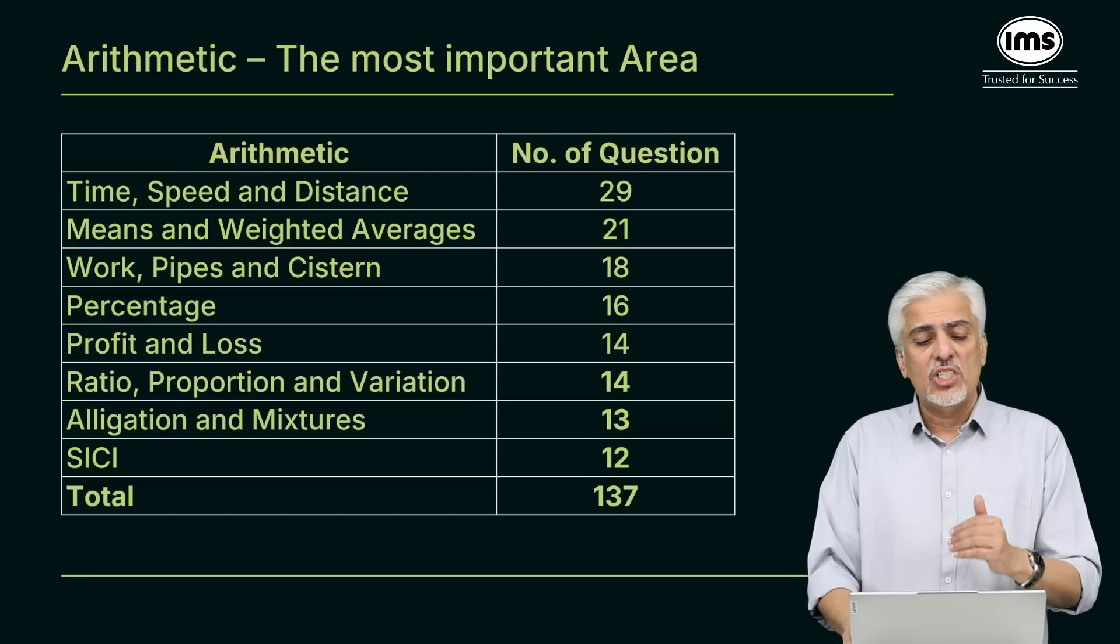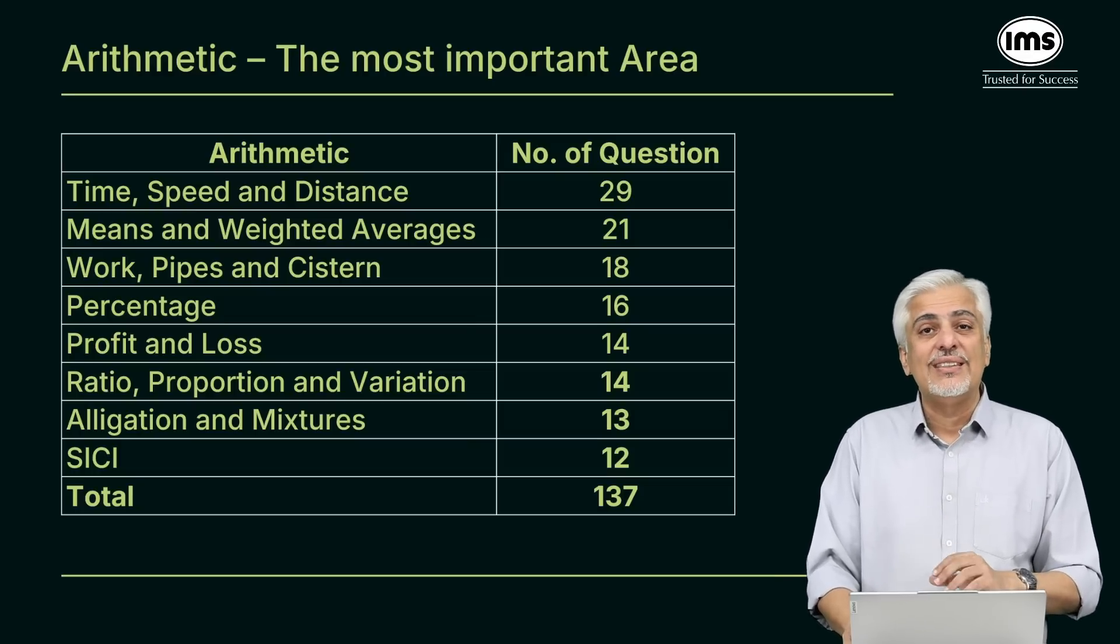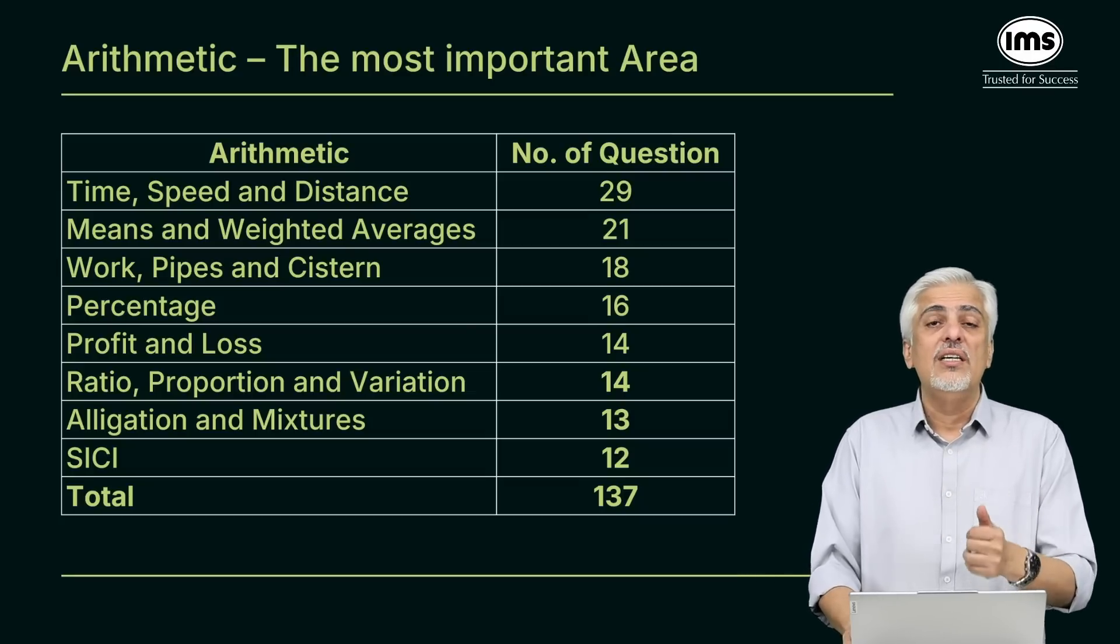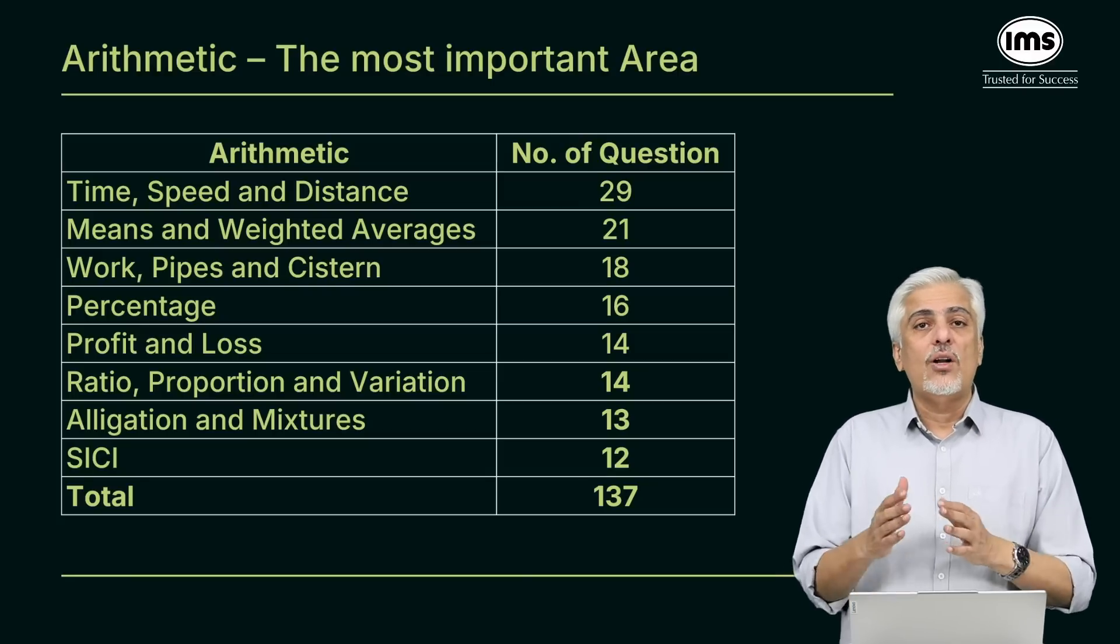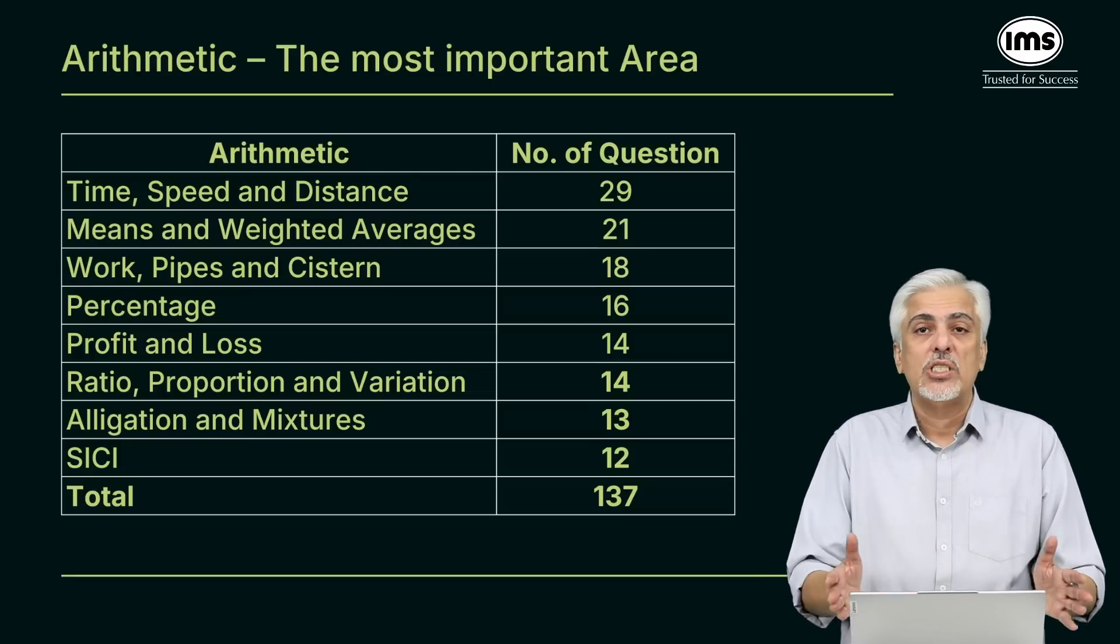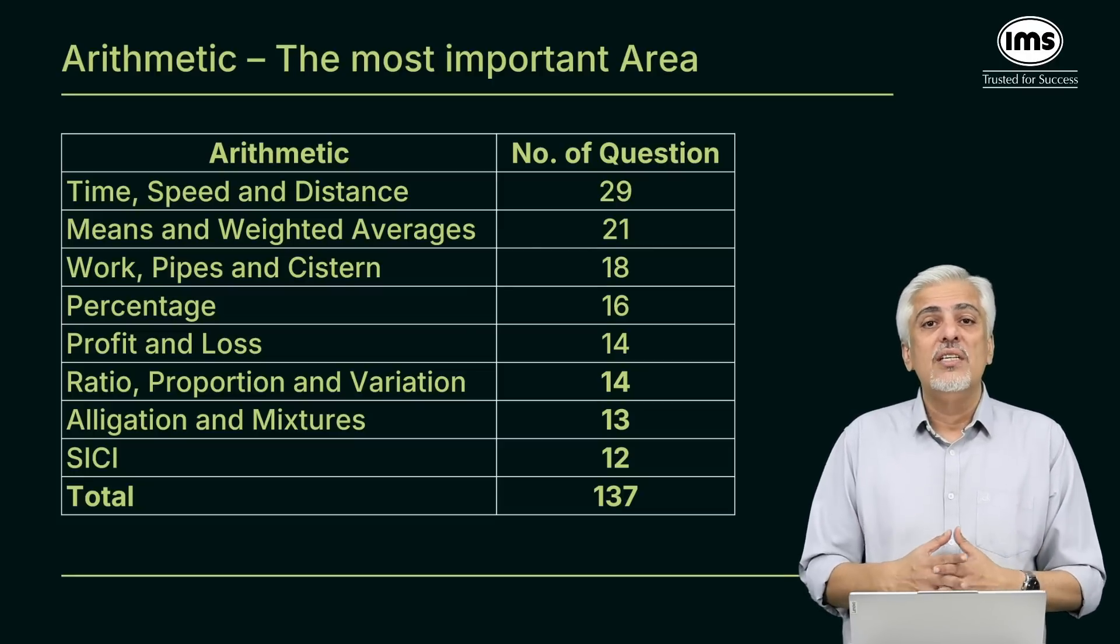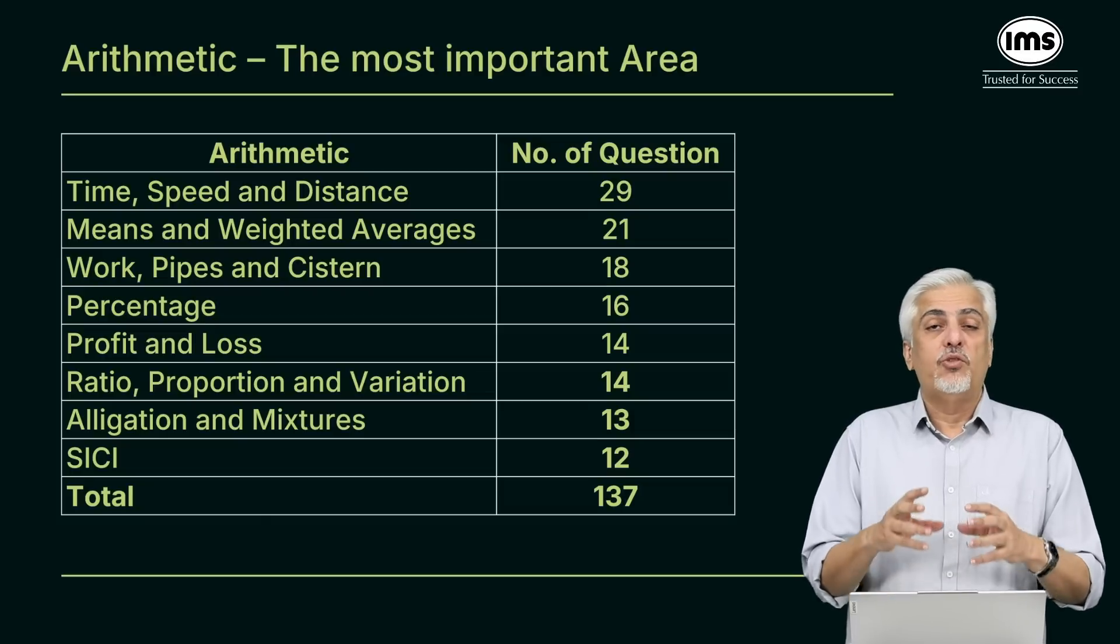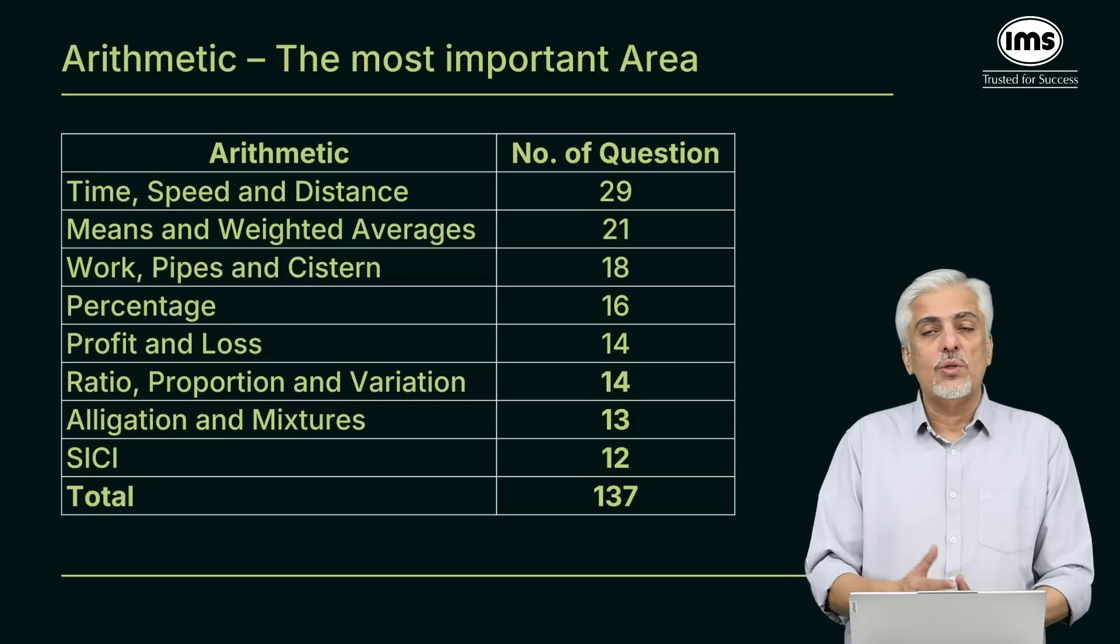Then percentages, profit and loss, ratio proportion, simple interest, compound interest. If I combine all of them, there are good 50-55 questions, which is very similar thing. Once you know percentages, you just need to know profit and loss some properties. You know percentages, you need to know simple interest compound interest properties. They are all combined topics. You can't say I know simple interest compound interest but I don't understand percentages. You will need to know successive percentage change or successive discounts to understand simple interest compound interest. Same way you will have to understand profit and loss. Ratio proportion also has a good 14 questions. Mixtures allegation 13 questions.